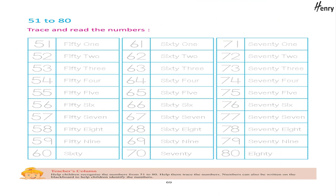51 to 80 — Trace and read the numbers: 51, 52, 53, 54, 55, 56, 57, 58, 59, 60, 61, 62, 63, 64, 65, 66, 67, 68, 69, 70, 71, 72, 73, 74, 75, 76, 77, 78, 79, 80.